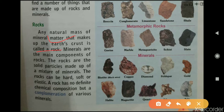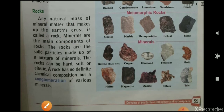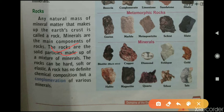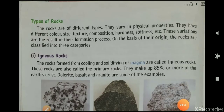Minerals are the main components of rocks. Rocks are solid particles made up of a mixture of minerals. Rocks can be hard, soft, or elastic. A rock has no definite chemical composition but is a conglomeration of various minerals.